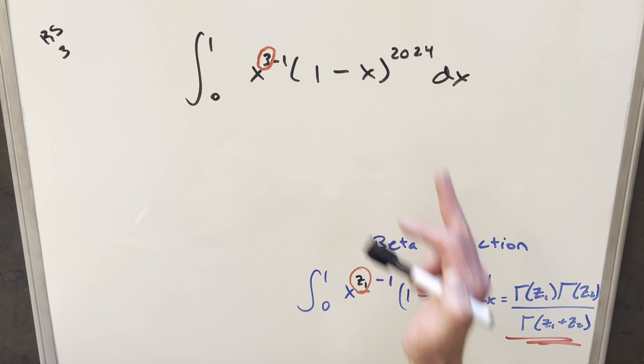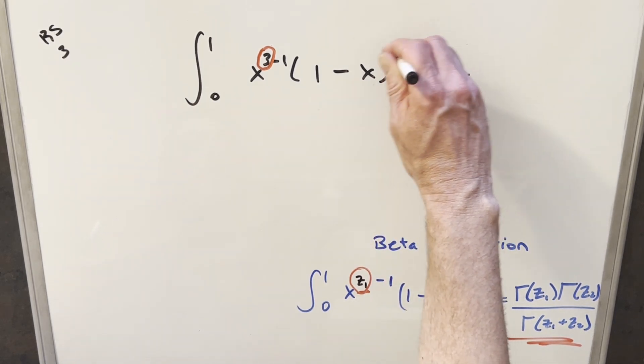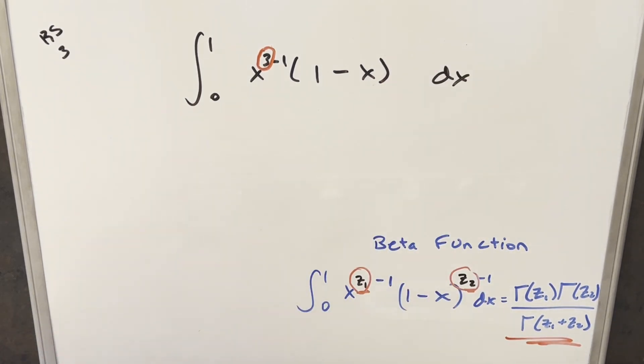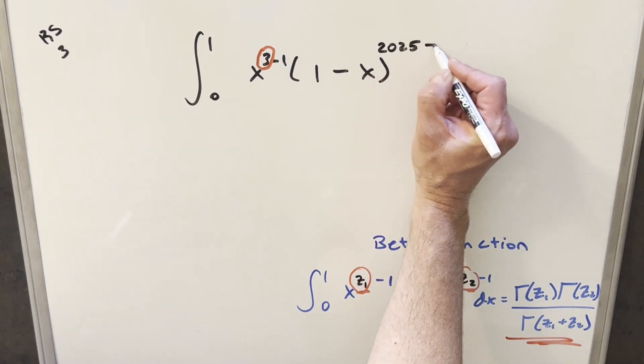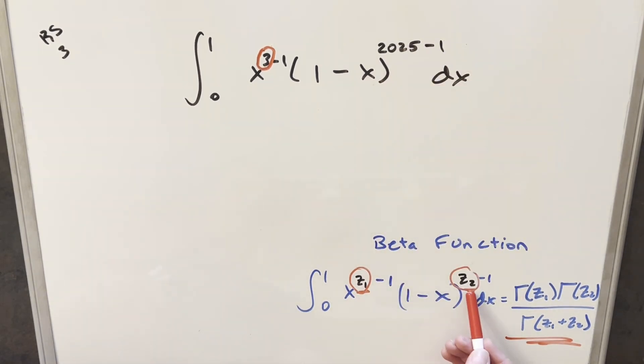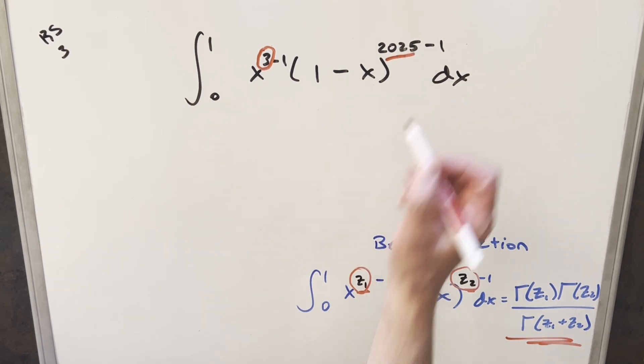And then here, I'll do the same thing on 2024, just rewriting that. So for 2024, I can write it as 2025 minus one. And then so for our z2 value, that's just going to be 2025.